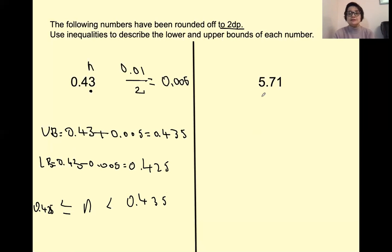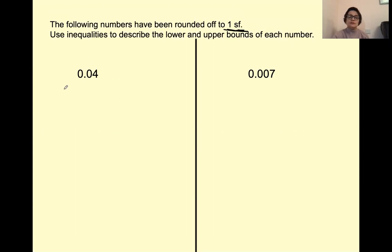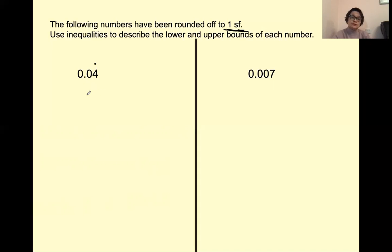Follow exactly the same strategy to describe the lower and upper bound of the next number — again to two decimal points, so it's the hundredths. Now let's have a look at another example where our numbers have been rounded off to one significant figure. Remember, it's not the same as rounding to one significant figure — the number has already been rounded. We need to find the limits using inequalities. To identify the first significant figure of any number, we don't count the zeros in front. It's the first non-zero integer.